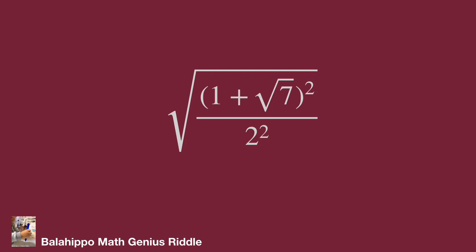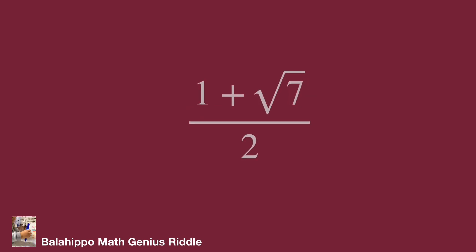We get the new information, then remove the square root. It equals 1 plus square root of 7 over 2. It is the value we get. Do you find it? Hope you enjoy the video. Thank you.